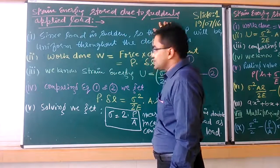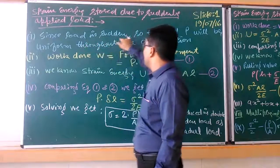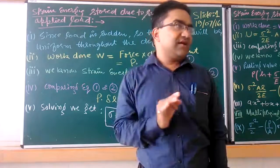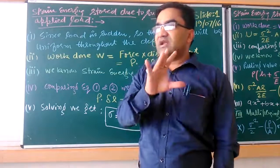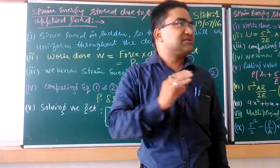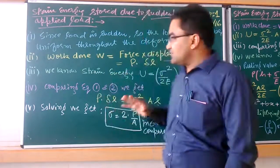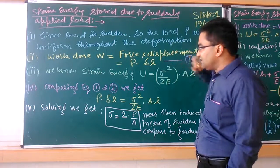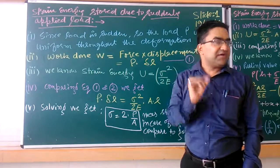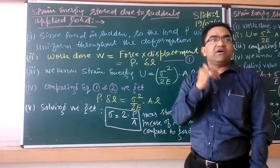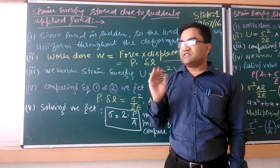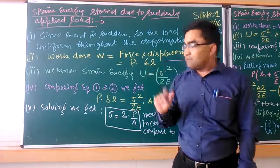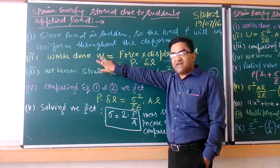When a sudden load is applied, in the case of a gradual load, we took the effective load as P by 2. But in the case of a sudden load, the load throughout the body will be the same. So in that case, we will take the effective load as P only. Whatever load you are applying suddenly, the complete load will be considered and it will act uniformly throughout the material.